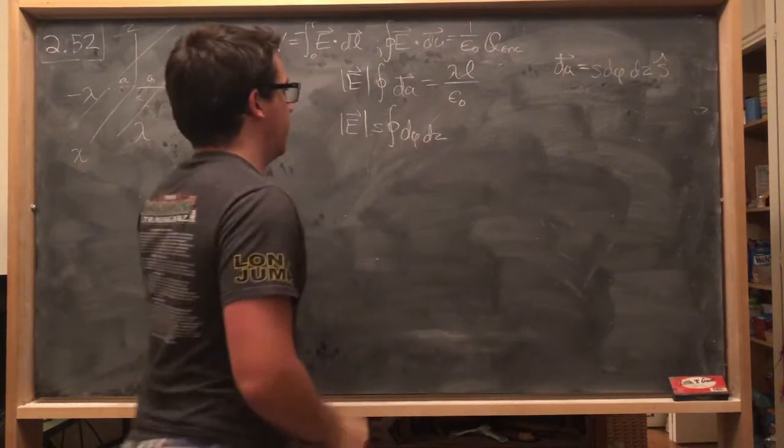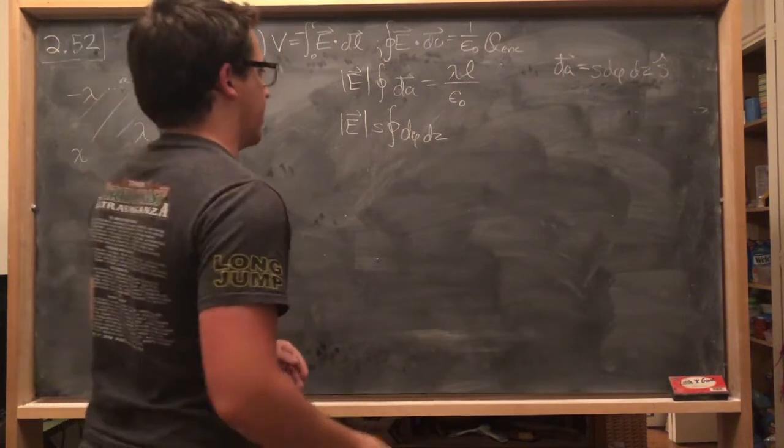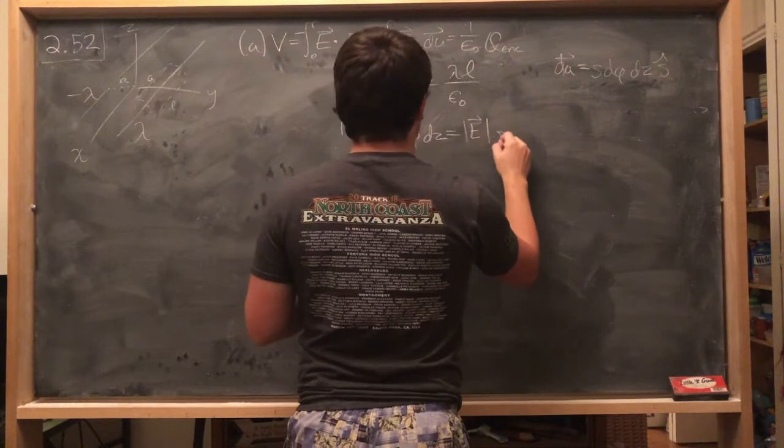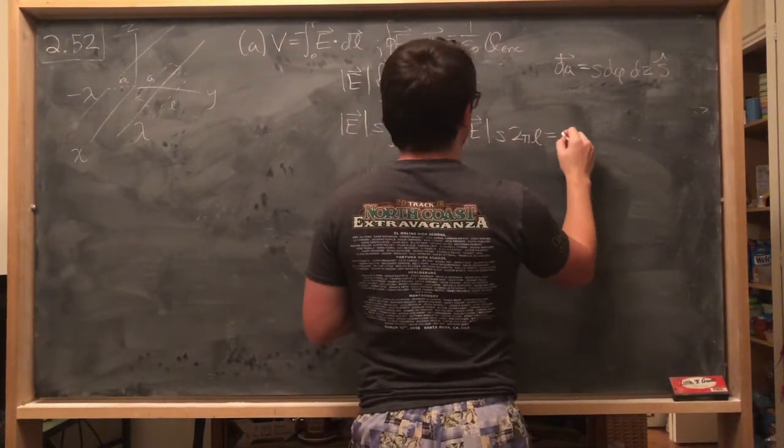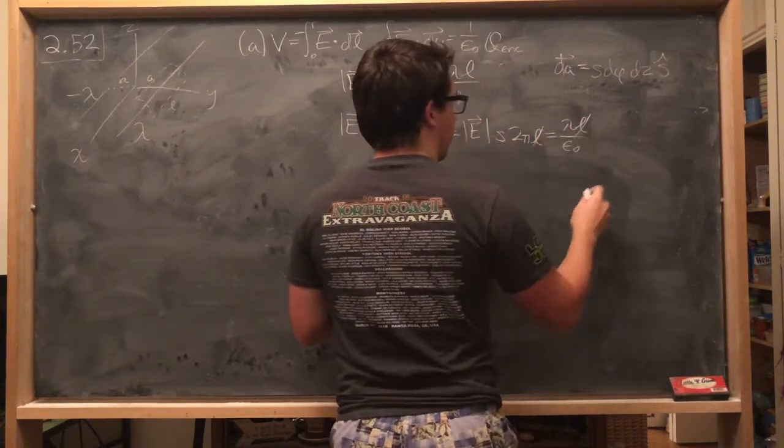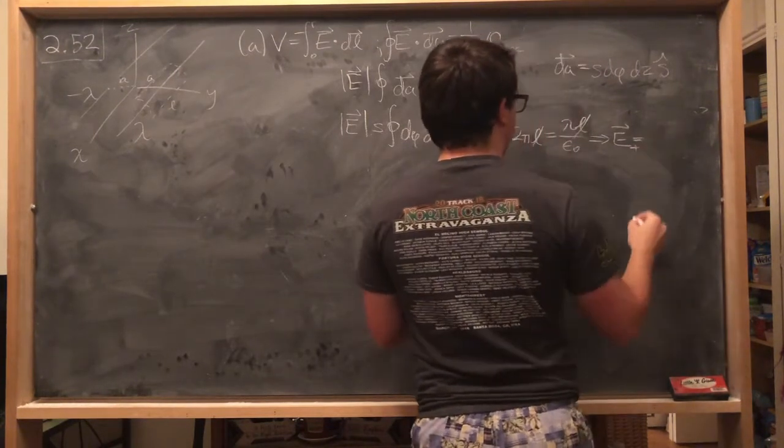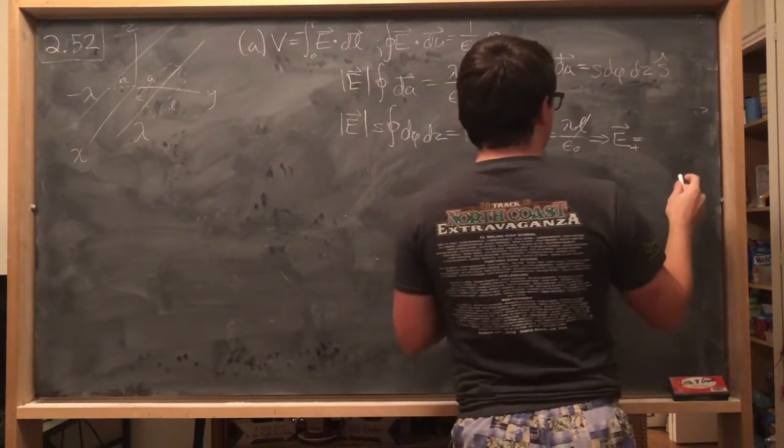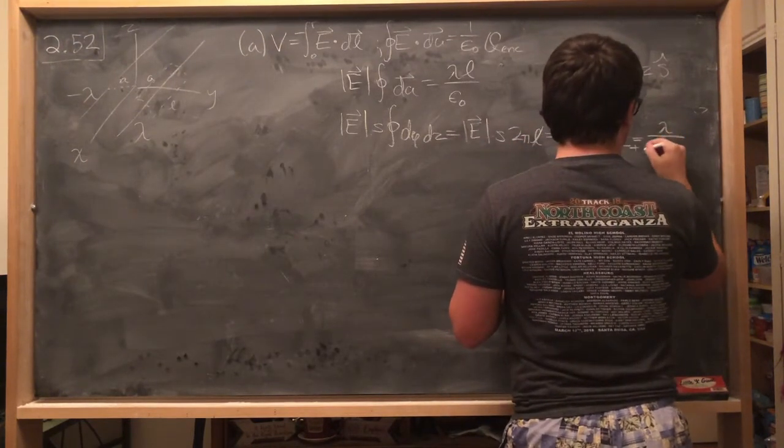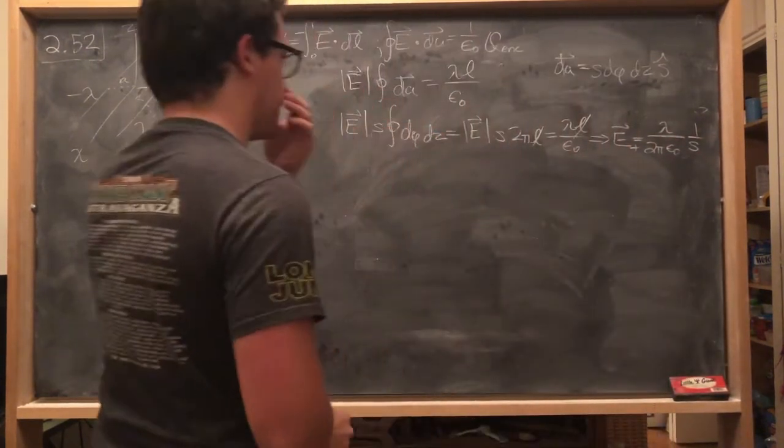And so then we get the closed loop integral of d phi dZ. Phi would be evaluated from 0 to 2 pi, Z from 0 to our length L, and so then this would become electric field of magnitude S times 2 pi L equals lambda L over epsilon naught, cancel out our L's, and we can see that the electric field, at least for the positive wire, is going to be lambda over 2 pi epsilon naught 1 over S.